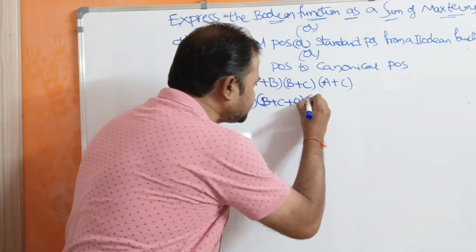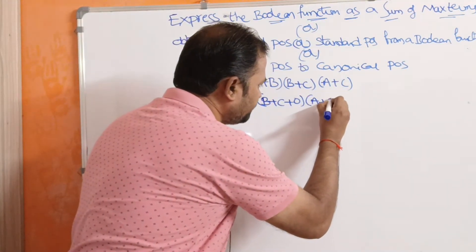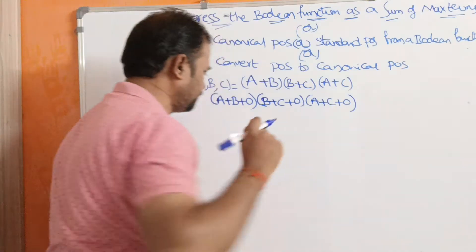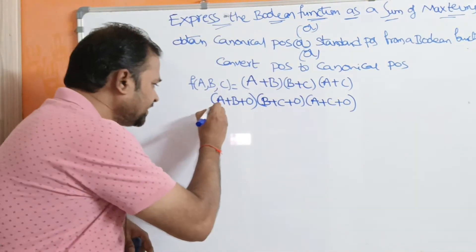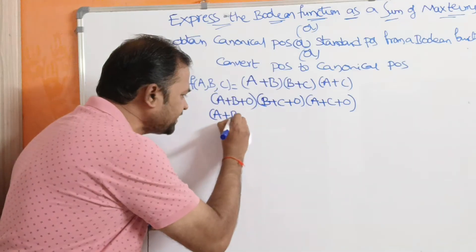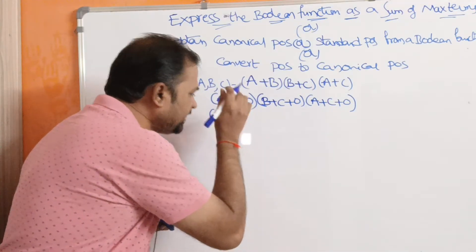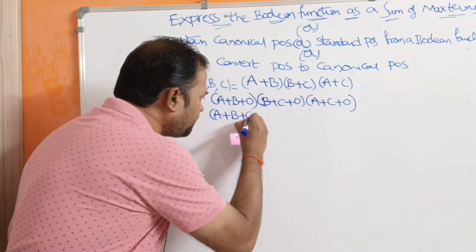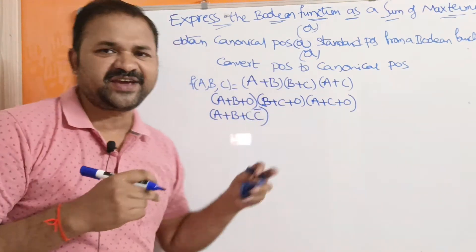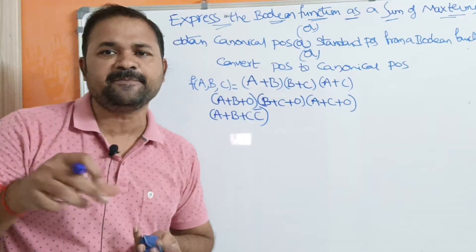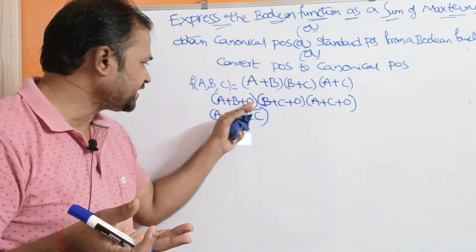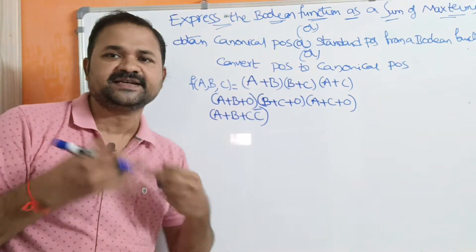In the third term, B is missing, so we are adding 0 there as well. Now, in order to obtain C in the first term, in place of 0 we replace it with C·C̄. This is because we have the formula A·Ā = 0. So in place of 0, we are replacing with C + C̄.